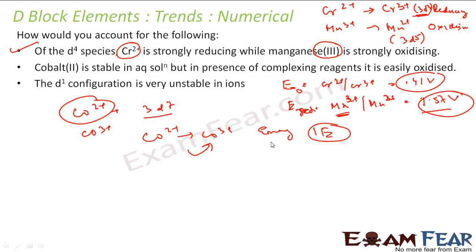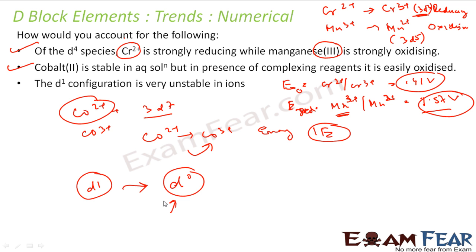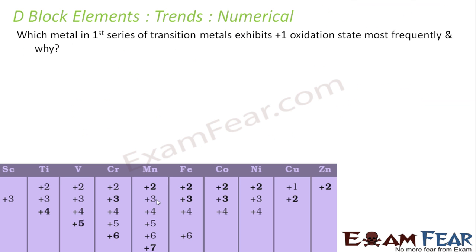A d¹ configuration is very unstable in ions — it will lose one electron to become d⁰, which is stable. So d¹ ions are easily oxidized and are good reducing agents. Among first series transition metals, copper most frequently shows a +1 oxidation state because Cu⁺ has configuration [Ar]3d¹⁰4s⁰, which is a stable fully-filled configuration.